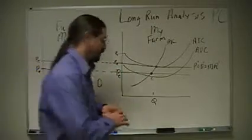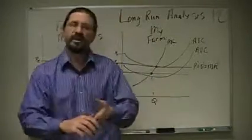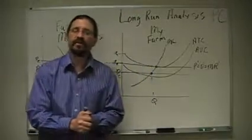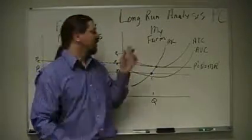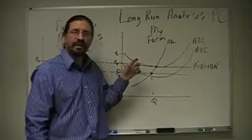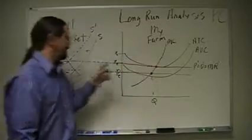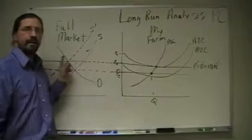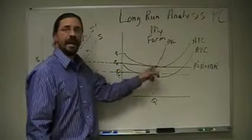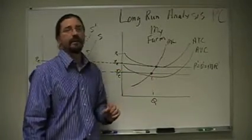And so this points out one of the disturbing, or well, just factual things about perfect competition: in the long run, you're never going to have economic profit. Why? Because in the long run, people can hop in and out of the market based on whether or not they're making an economic profit.